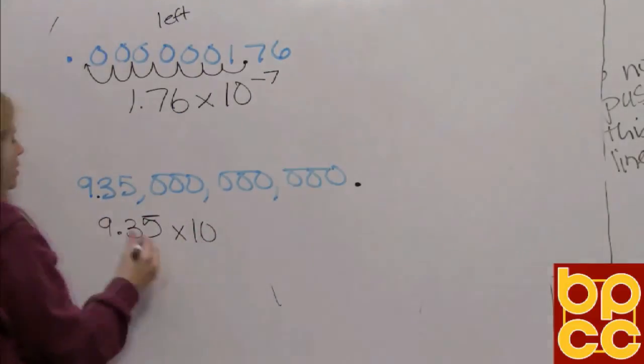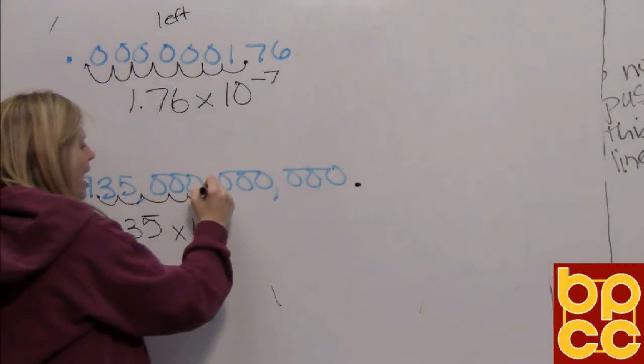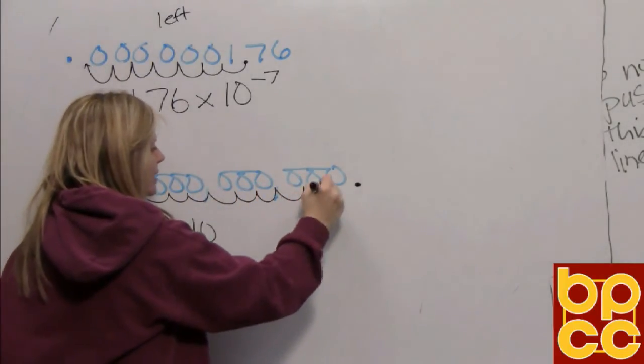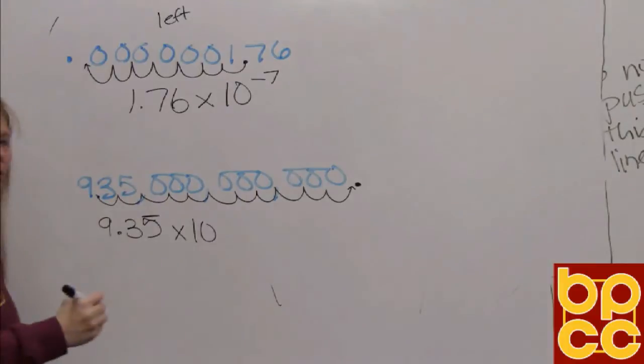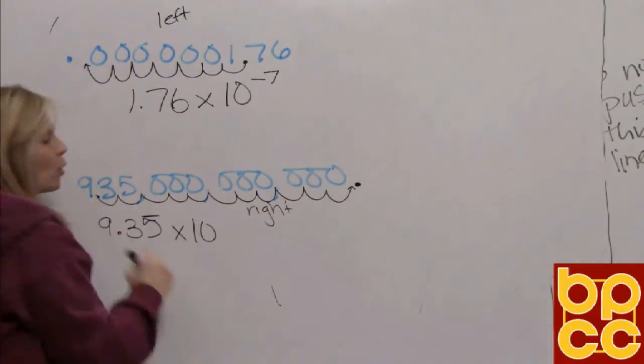So we're gonna count one, two, three, four, five, six, seven, eight, nine, ten, eleven. We moved that decimal point eleven places. And we moved it to the right, because we moved it to the right, our exponent would be positive.